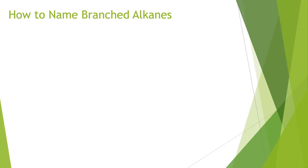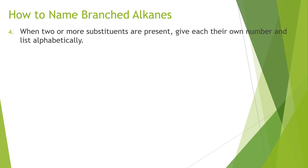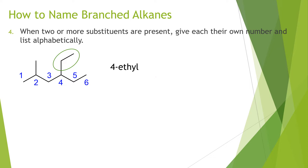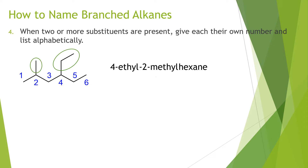If you have two or more substituents on a molecule, give each their own number and list the substituents alphabetically. In this molecule the longest carbon chain is six carbons with two substituents. We numbered from left to right because the substituent appears sooner on the left side. The name is 4-ethyl-2-methylhexane. Notice that we list substituents alphabetically — even though the methyl group is on carbon two and the ethyl group is on carbon four, E comes before M, so we write 4-ethyl-2-methyl.